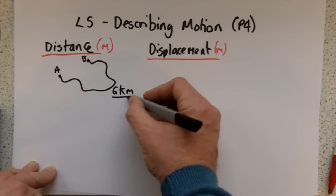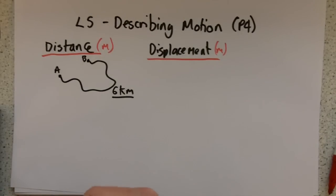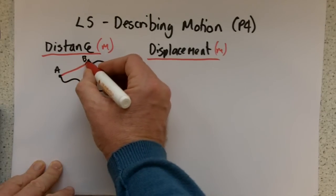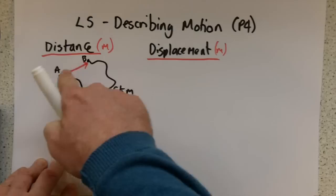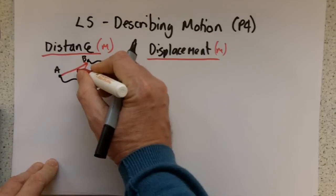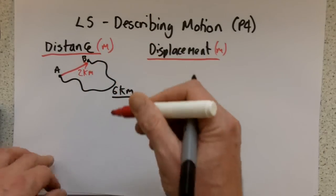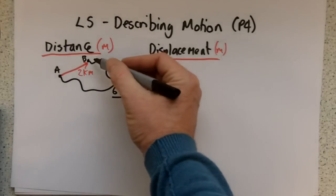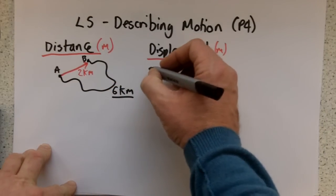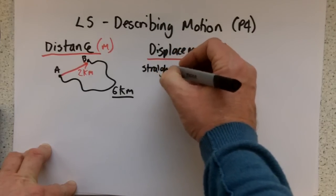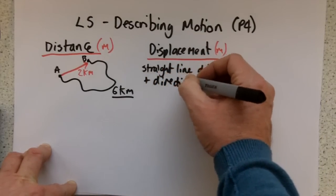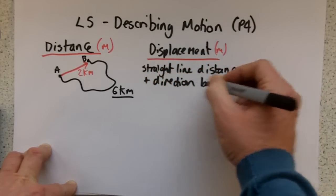So the distance that you have travelled is six kilometres. However, you could consider another measurement: how far have you gone overall in a straight line from A to B. This distance from A to B in a straight line is called the displacement. So the displacement might be just two kilometres. While you've travelled a total distance of six kilometres, your overall displacement in a straight line from one point to the other is two kilometres. Displacement is defined as a straight line distance and direction between two points.